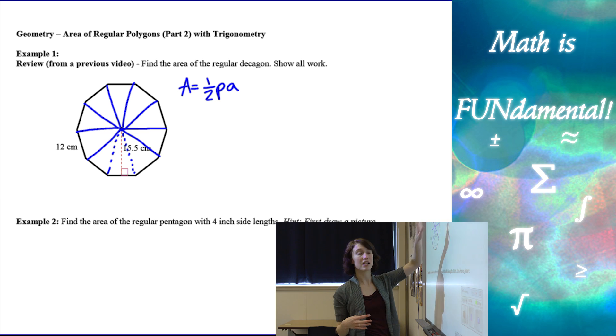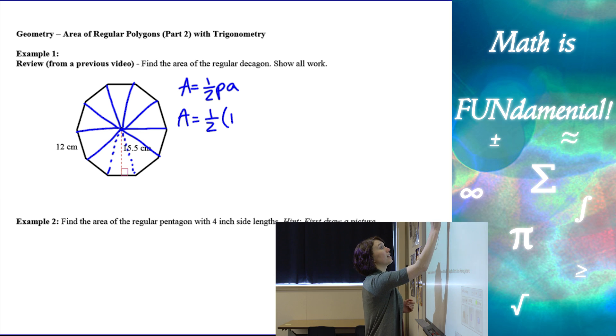And that little a, the apothem, stands for the length from the center perpendicular to the side length of our polygon. So 15.5 would be our apothem. So if we use our formula, the perimeter of our shape is going to be the side length times the number of sides.